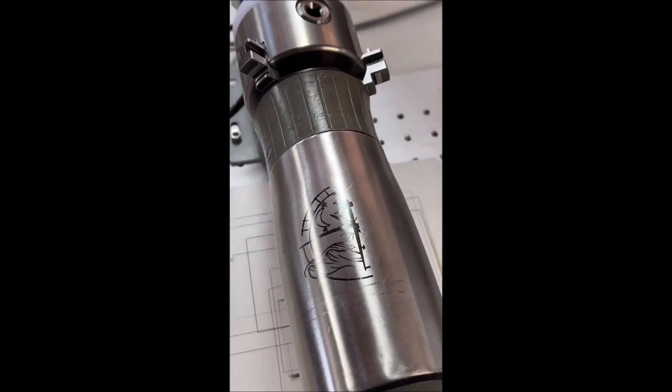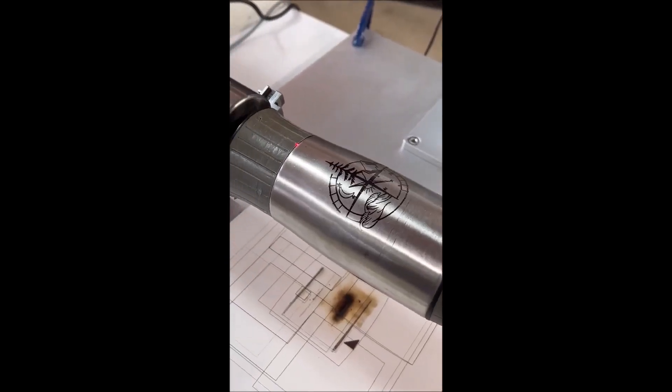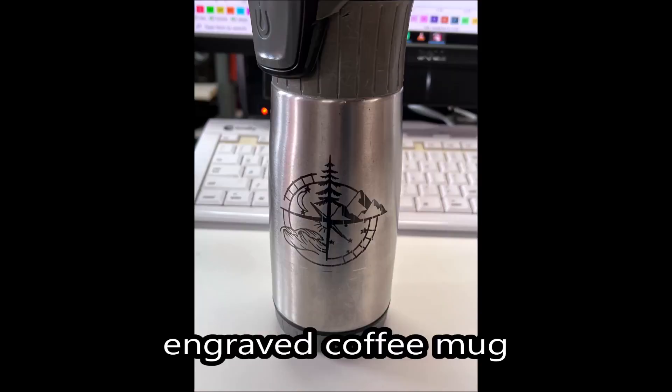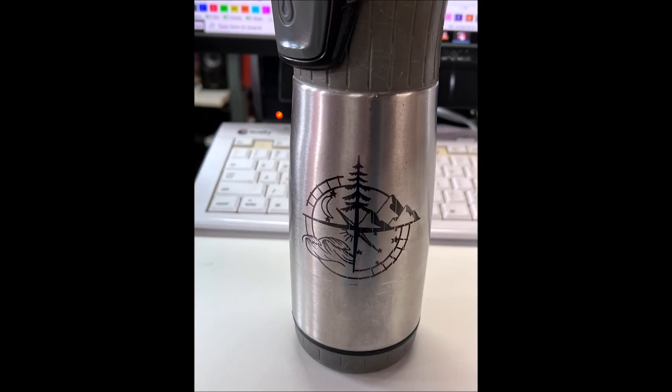This is a stainless steel mug with a black marking. The engraving is finished and the coffee mug looks good with that black marked compass.